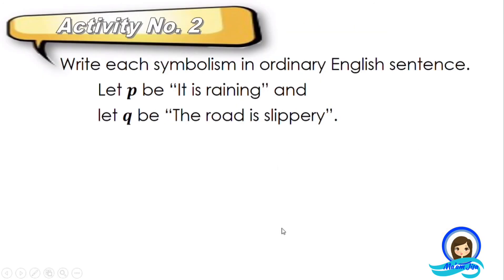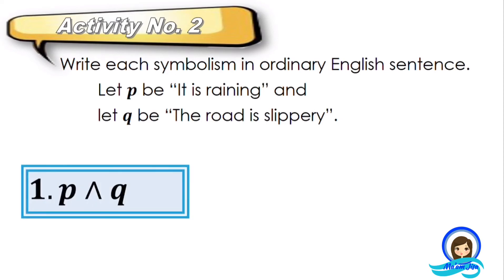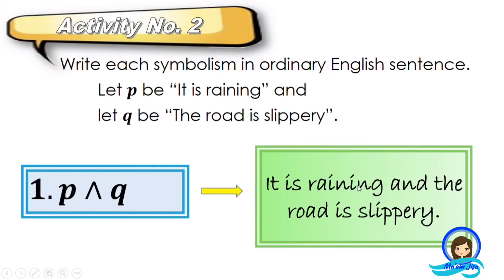For activity number two, write each symbolism in ordinary English sentence. Let proposition P be 'it is raining' and proposition Q be 'the road is slippery.' For the first given, the conjunction symbol is read as 'and.' P is 'it is raining' and Q is 'the road is slippery.' Therefore: it is raining and the road is slippery.